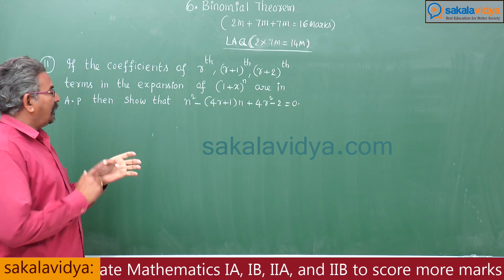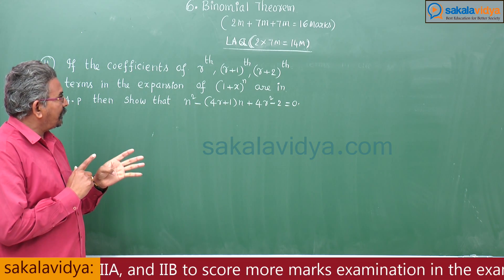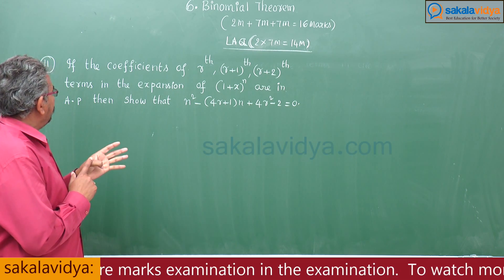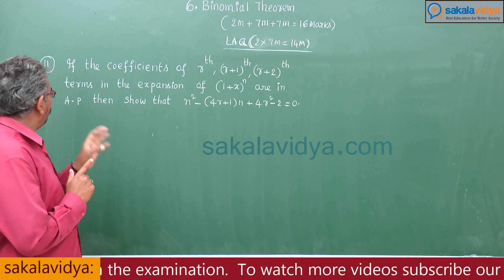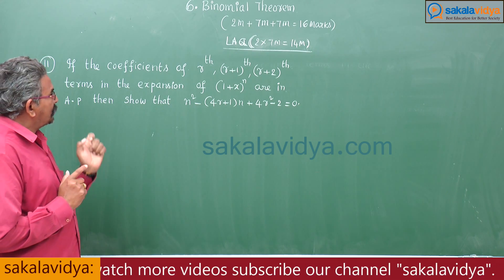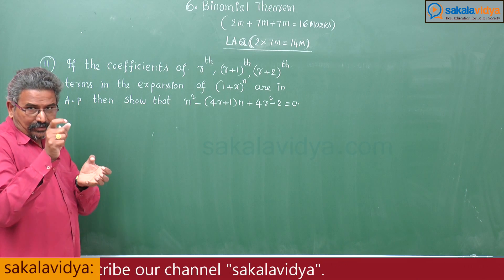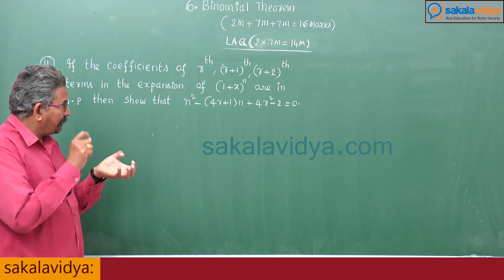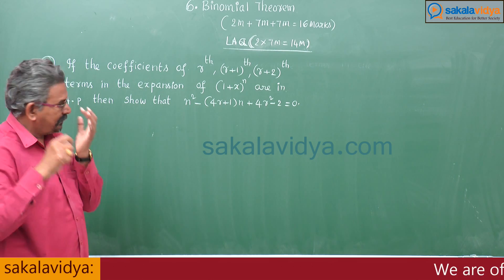If the coefficients of the rth, (r+1)th, and (r+2)nd terms in the expansion of (1+x)^n are in arithmetic progression, then first of all we write the rth term coefficient, (r+1)th term coefficient, and (r+2)nd term coefficient.